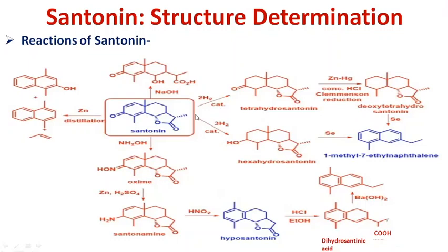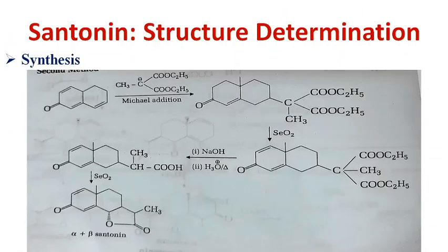Catalytic hydrogenation forms tetrahydrocentonin and hexahydrocentonin. Clemmensen reduction converts the carbonyl group to a CH2 group, yielding deoxytetrahydrocentonin. Selenium dehydrogenation yields 7-ethyl-1-methylnaphthalene. By assigning this structure, all reactions and final products are explained, and the final structure of centonin is confirmed by synthesis.